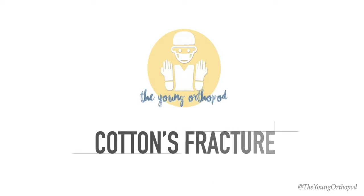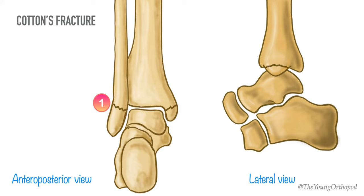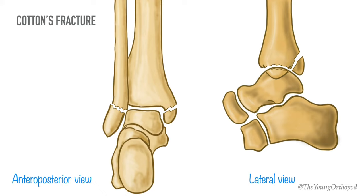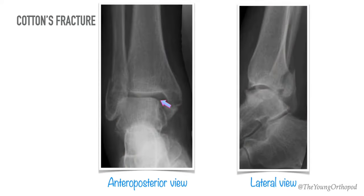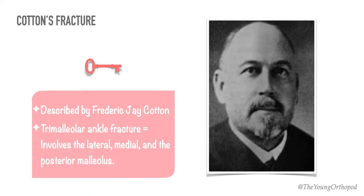A trimalleolar ankle fracture is also known as Cotton's fracture. It involves the lateral malleolus, the medial malleolus, and the distal posterior aspect of the tibia, referred to as the posterior malleolus. The trauma is sometimes accompanied by ligament damage and dislocation. It was first described by Frederick J. Cotton in 1915, who was an American orthopedic surgeon.